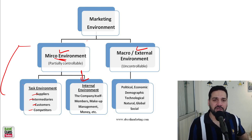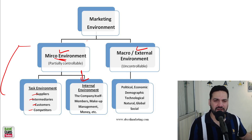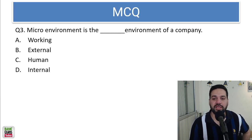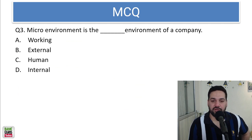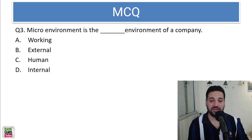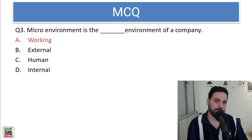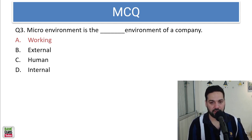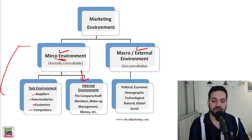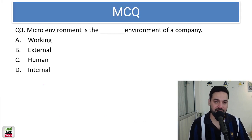In the external environment, there are political, technological, economic, and demographic factors. Micro environment is the working environment of the company — it is not just the internal environment. All the people who are working with the company are part of the micro environment, because the task environment is also included, not just the internal environment.